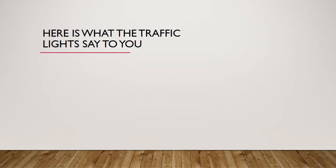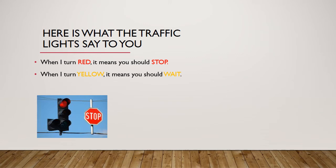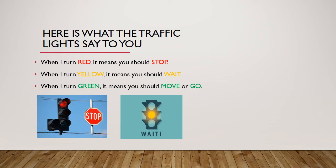Here is what the traffic lights say to you. When the light turns red, it means stop. When it turns yellow, you should wait. When it turns green, you should move or go. So red means stop, yellow means wait, and green means move or go.